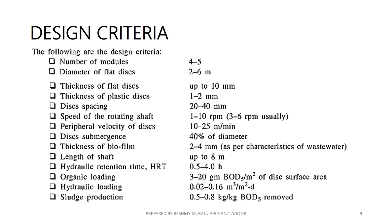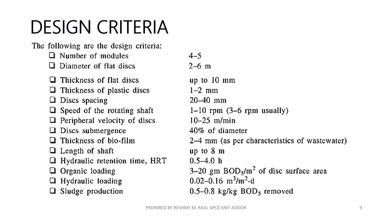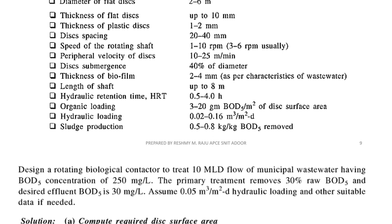The design criteria include several key parameters: the number of modules, the diameter of the flat disc within a particular range, rotational speed of 1 to 10 rpm (typically 3.6 rpm), biofilm thickness of 2 to 4 mm (which varies with wastewater characteristics), and shaft length up to 8 meters depending on the manufacturer's standard module size.